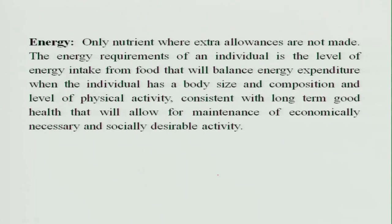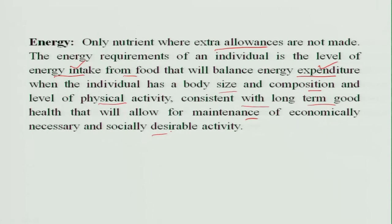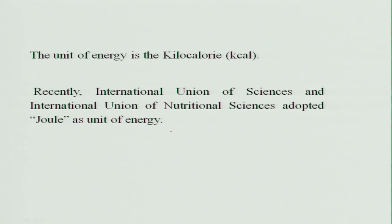Energy is the only nutrient where extra allowance is not given. The energy requirement for an individual is taken as the level of energy intake from food which should balance energy expenditure — intake and expenditure should be balanced. There should be no extra energy; the person should not be in a positive energy balance, and the allowance is consistent with long-term good health and allows for maintenance of economically necessary and socially desirable activity. The unit for energy is kilocalorie, but recently the International Union of Sciences and the International Union of Nutritional Sciences have adopted the Joule as the unit of energy.